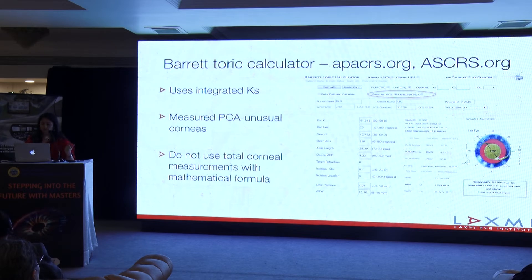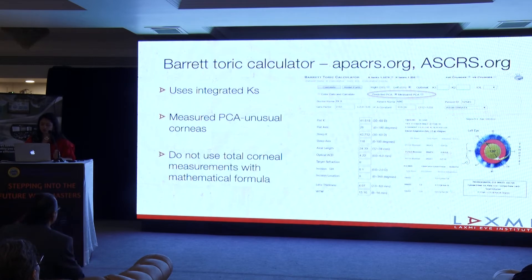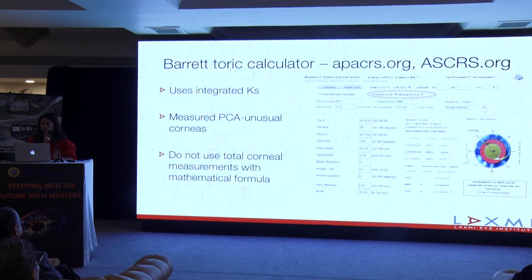If you use the Barrett toric calculator from these websites, the latest updates are accessible to us. You can use the integrated K for calculation and use the predicted or measured PCA option. The measured PCA is a better option to use in an unusual cornea like keratoconus or post-refractive surgery. Remember not to use the total corneal power measurements with these mathematical models, because then you would account for the PCA twice.